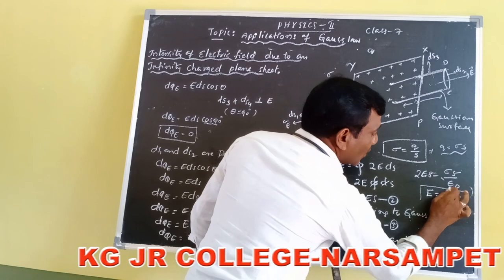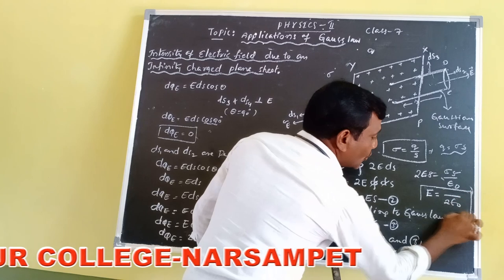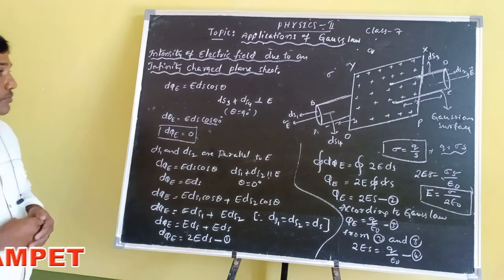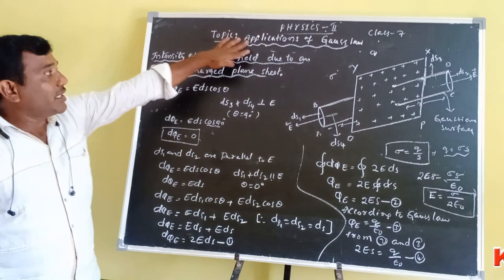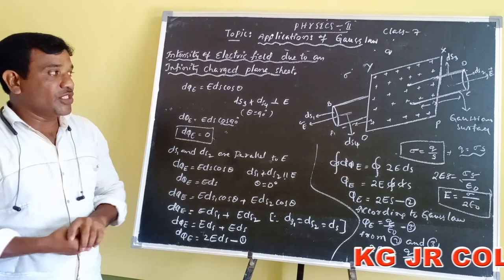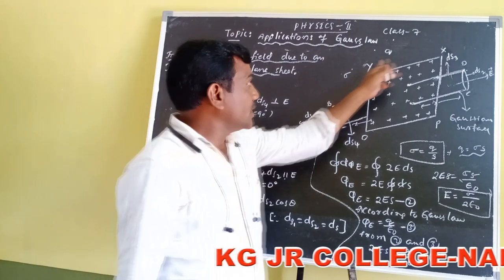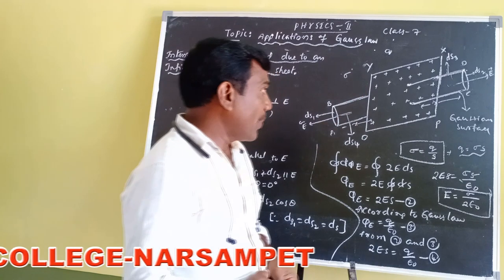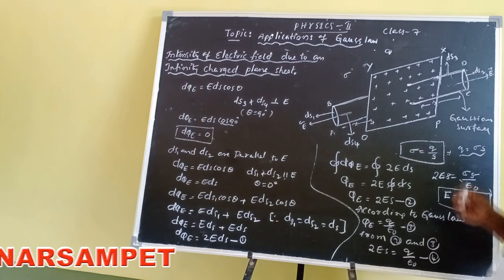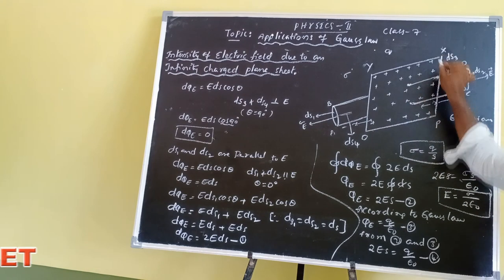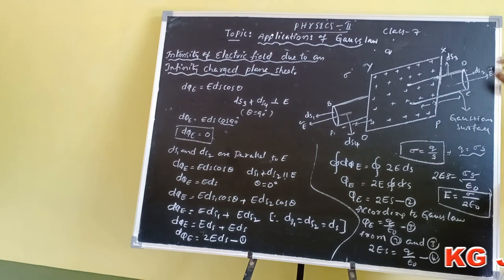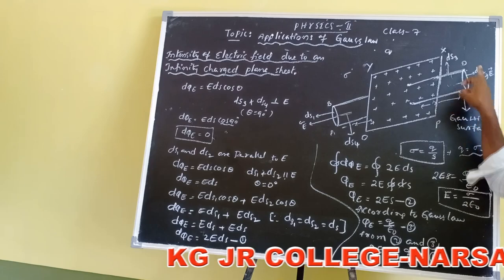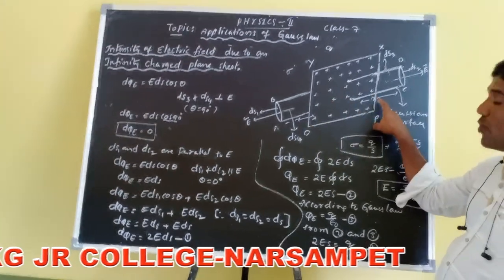This is the intensity of electric field due to an infinitely charged plane sheet: E = σ/(2ε₀). The electric field is perpendicular to the plane sheet. For determination of E, we found the total electric flux passing through the total Gaussian surface with inside length X and outside length X.